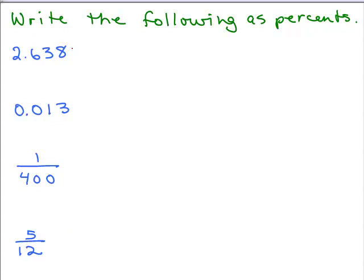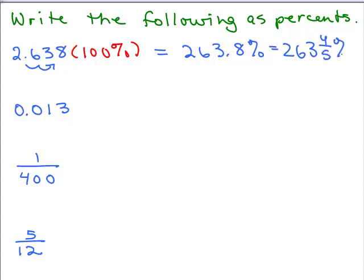Let's do the first one. We just multiply by 100 percent. When we multiply 2.638 by 100, that means we move the decimal 2 to the right. So that will be 263.8 percent, which is a perfectly fine answer. But if you want to write the .8 as a fraction, keep in mind that's 8 tenths, which reduces to 4 fifths. So this is also another correct way of writing the answer: 263 and 4 fifths percent.